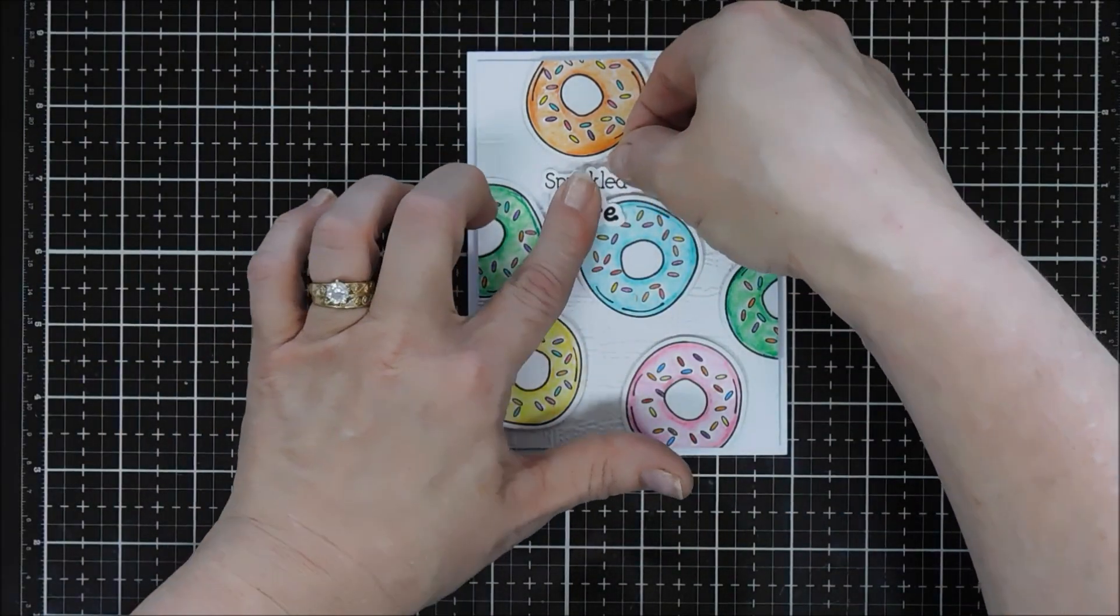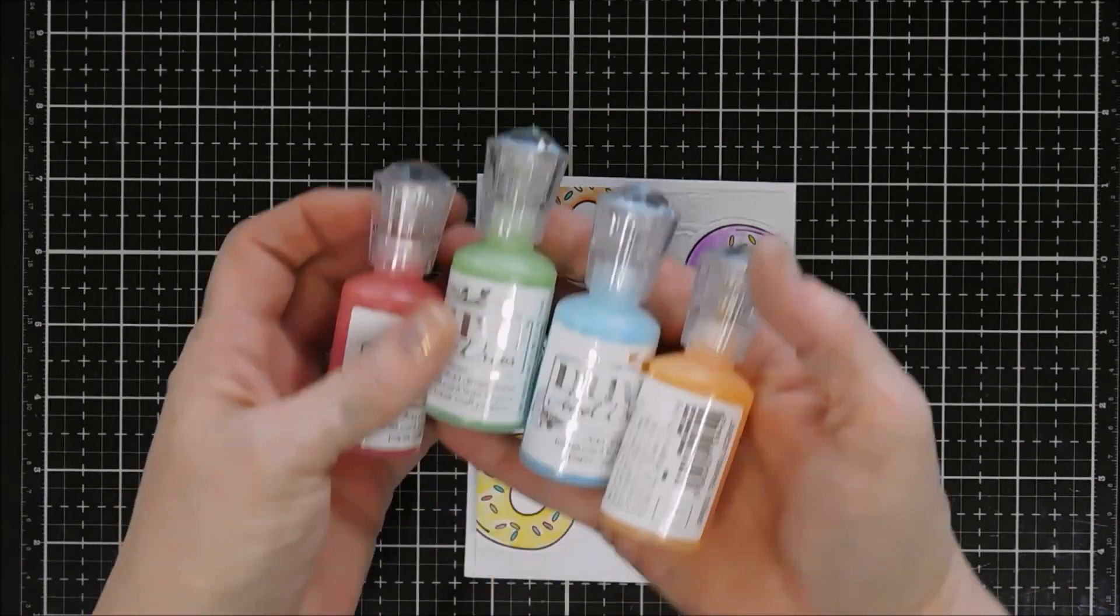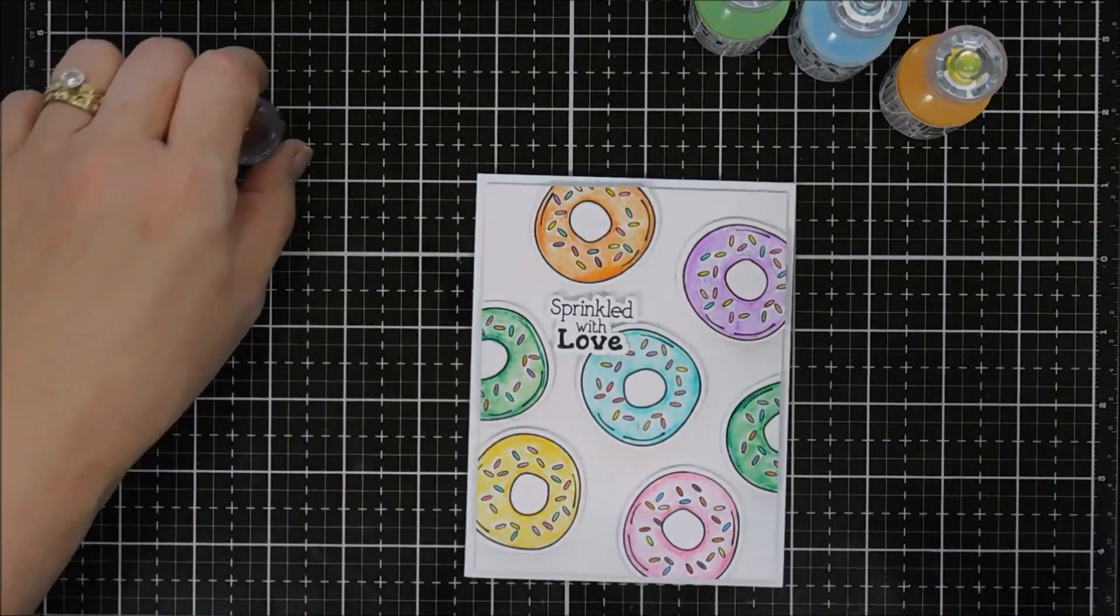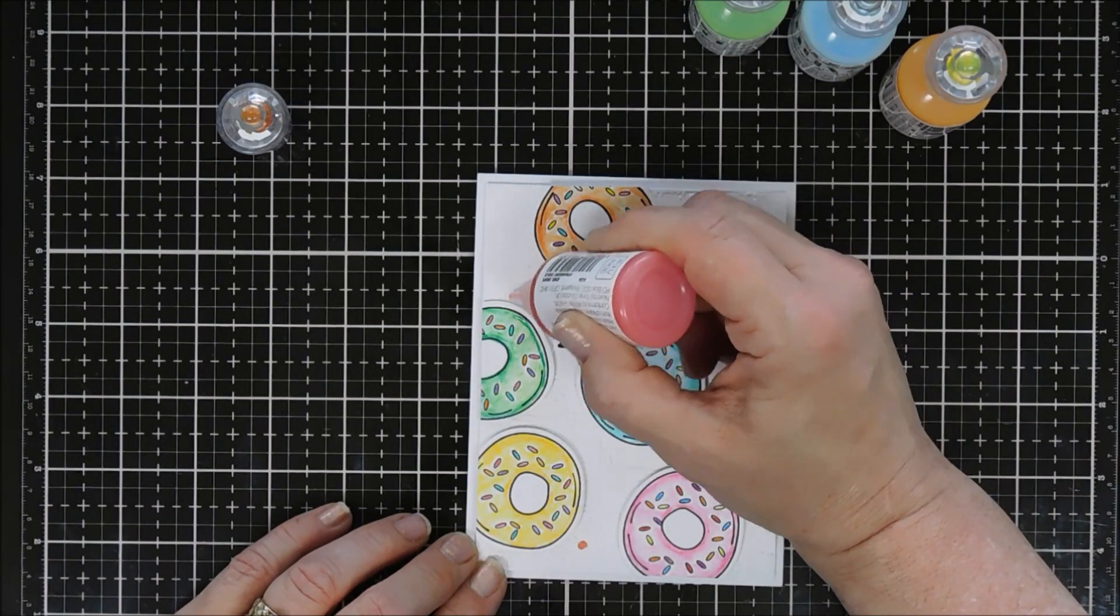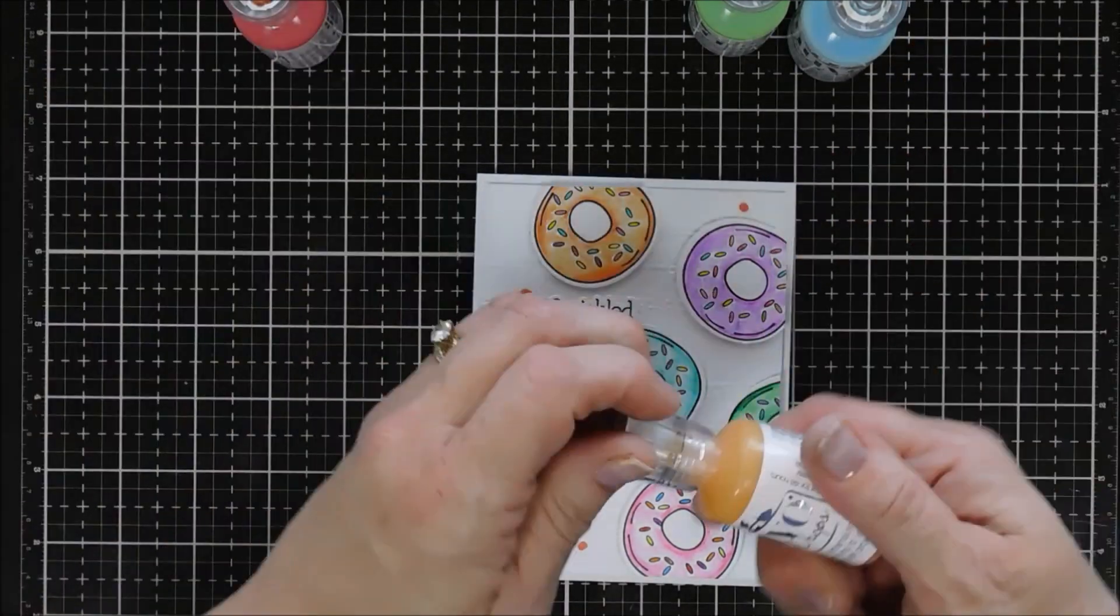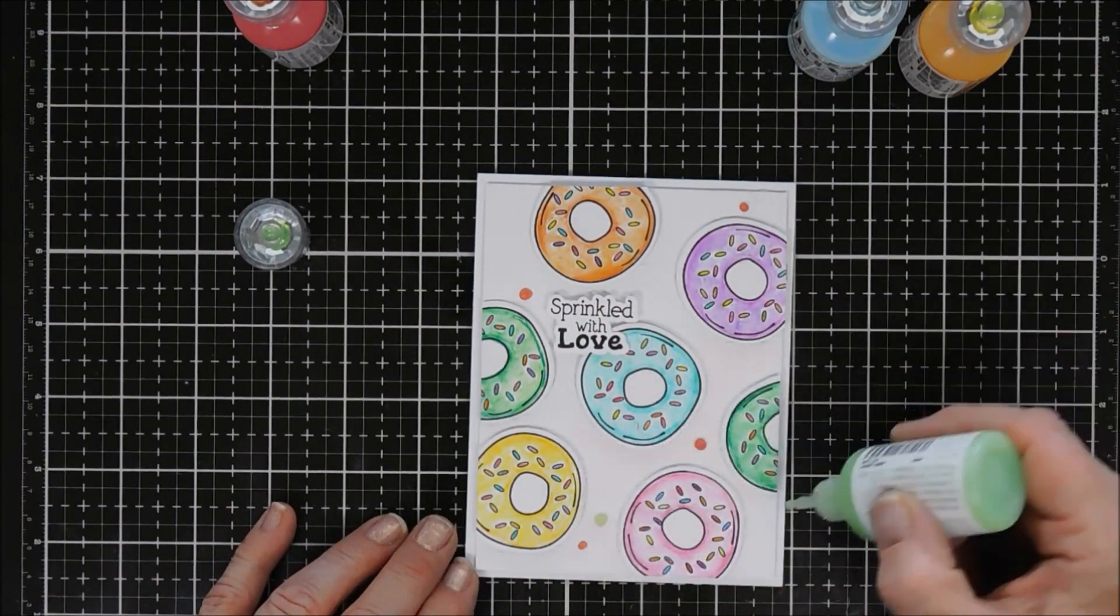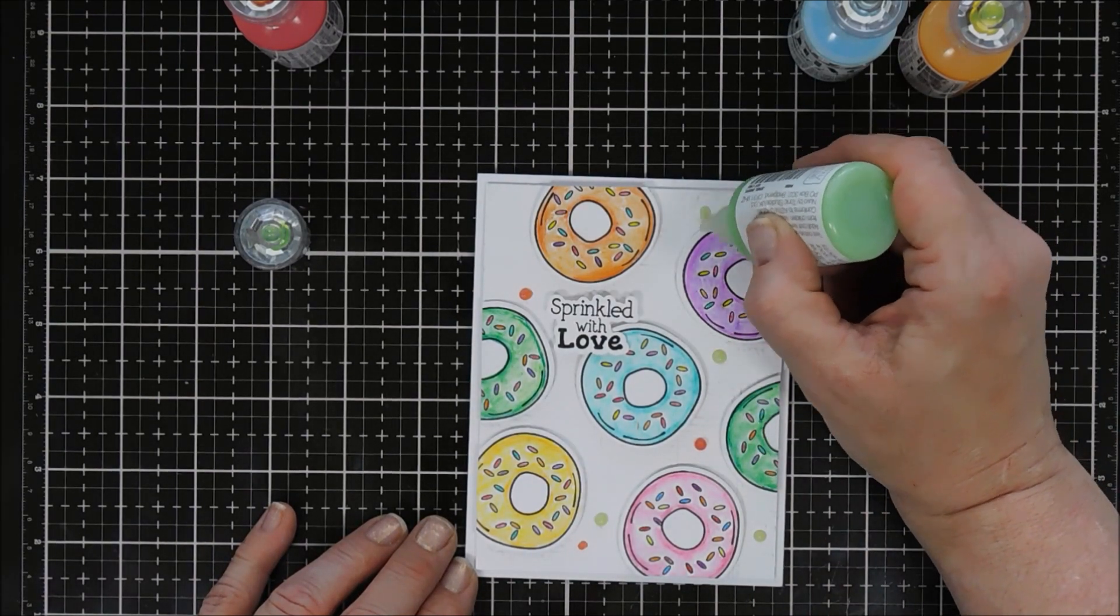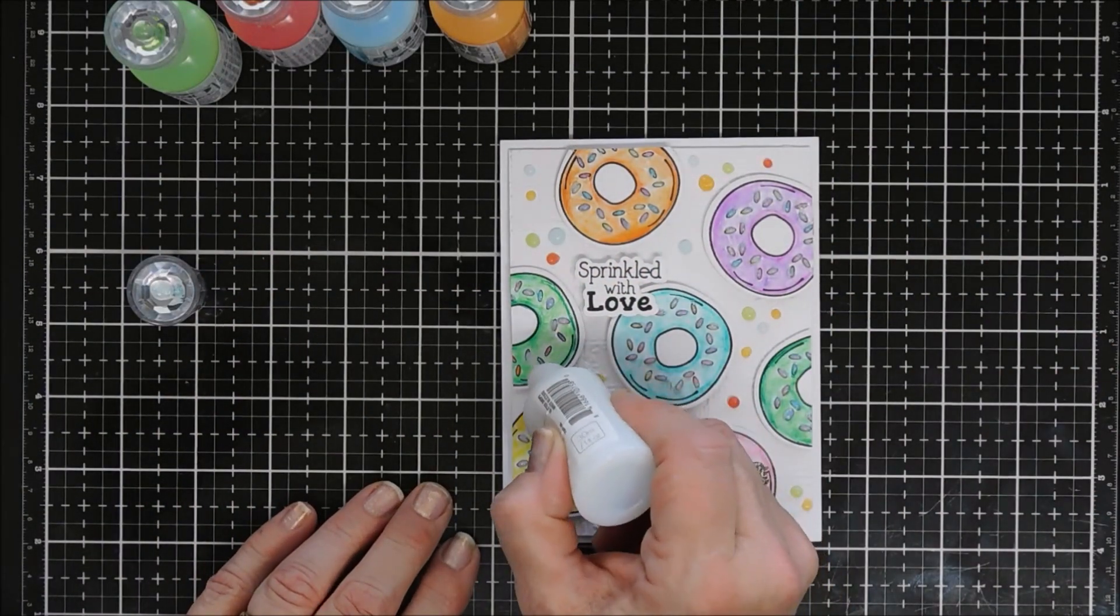Now I'm going to bring in some Nuvo Jewel Drops. These will dry translucent, which means they'll dry clear with a little bit of tint of color. I'm starting off with Strawberry Coulis. Next we're going to go in with some Key Lime, and then I did add the orange, which is Orange Marmalade, and then the blue is Sea Breeze, all over my panel, filled with lots of sprinkles.